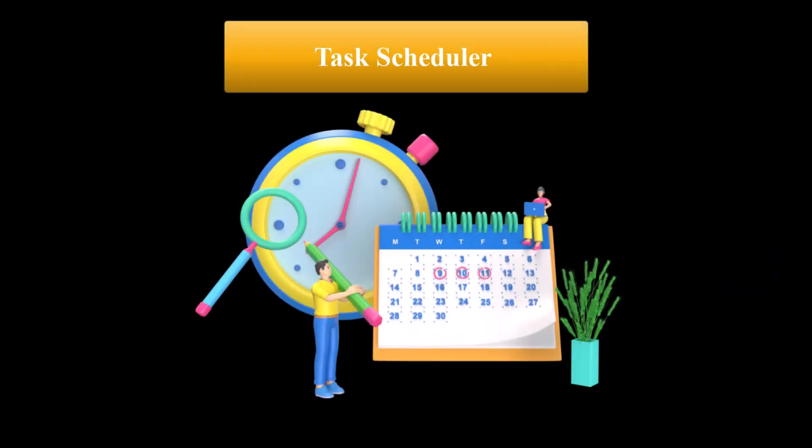A good example of this can be a task scheduler. Imagine you have a list of tasks to be executed with different priorities, and you need to schedule them in such a way that higher priority tasks are executed before lower priority tasks, and tasks with the same priority are executed in the order they were added.